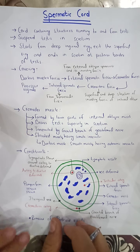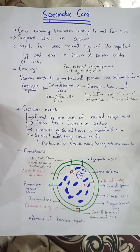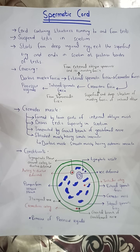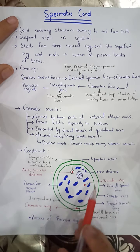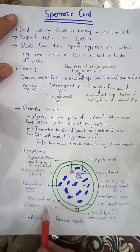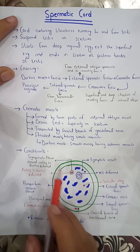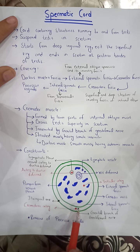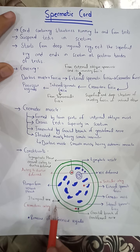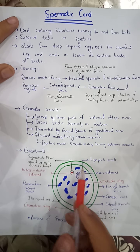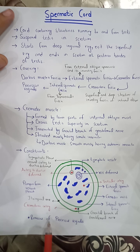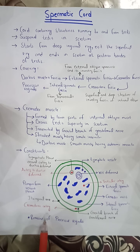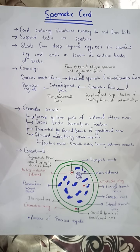One more structure is the remains of the processus vaginalis, which is an outpouching that forms during the 12th week of development. To summarize using the formula of 3: three arteries (testicular artery, artery to ductus deferens, cremasteric artery), three nerves (sympathetic plexus, genital branch of genitofemoral nerve, ilio-inguinal nerve), and three other structures (vas deferens, pampiniform venous plexus, remains of processus vaginalis). Thank you.